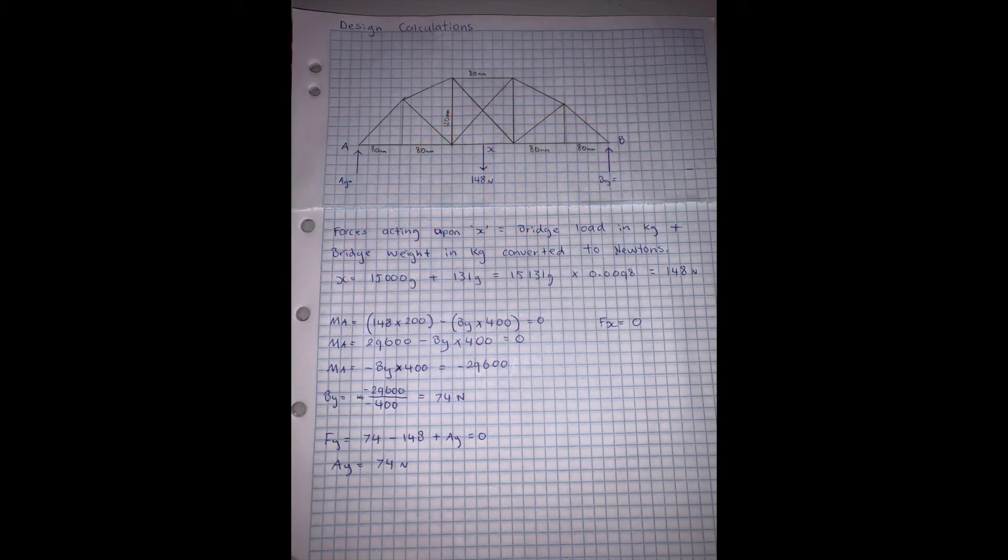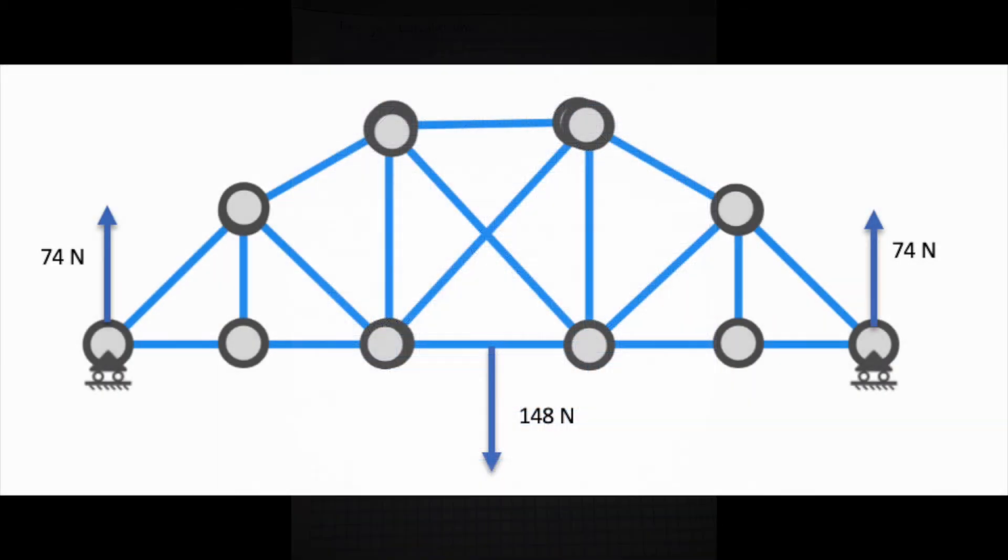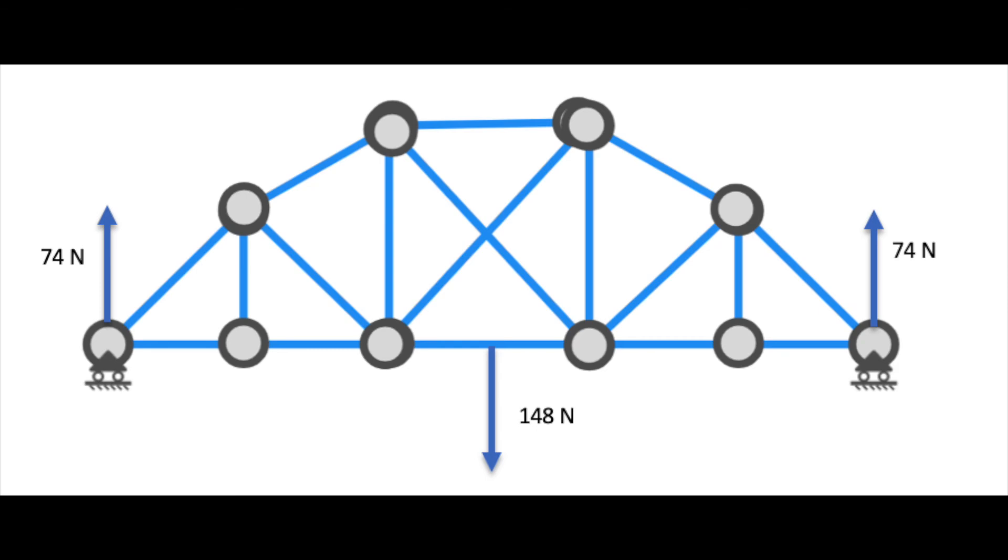We completed some simple design calculations for our final bridge. We converted the combined weight of the bridge and the load into Newtons, giving us the total load. We then calculated the forces in X and Y directions by figuring out the moment. As the bridge was symmetrical, we had even forces acting upon each support reactions.